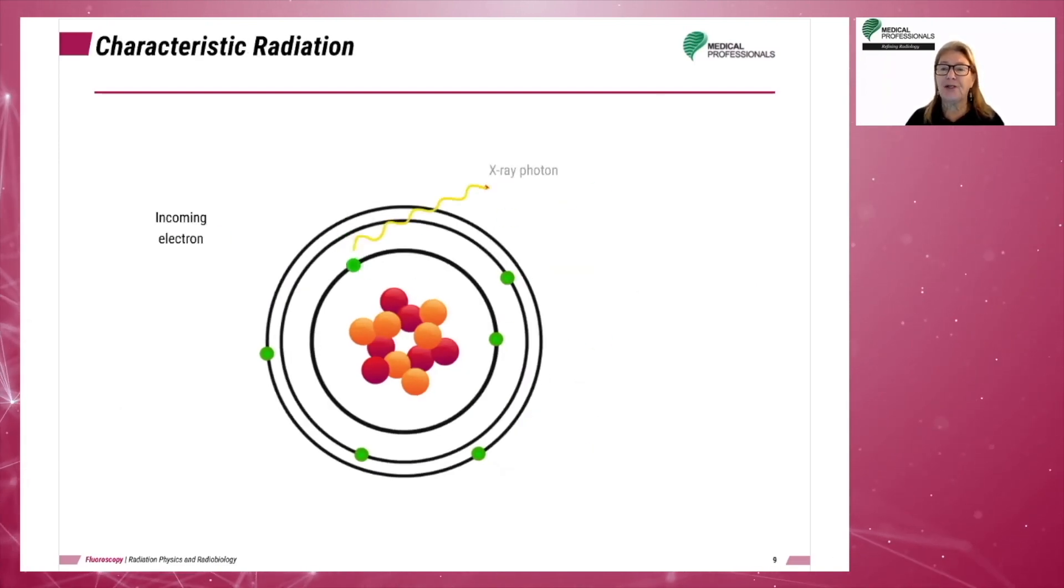Characteristic radiation is produced when the incoming electron is of sufficient energy to dislodge an electron from the K shell of the tungsten atom. The energy of the incoming electron must be at least 69.5 kilovoltage peak. We will round that up to say 70. Settings on an X-ray unit less than 70 kVp produce no characteristic radiation.